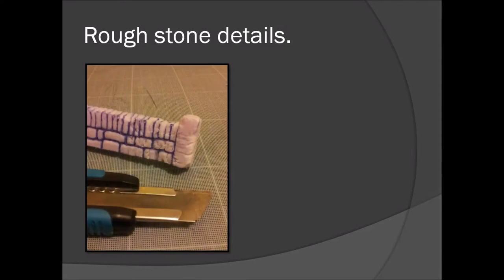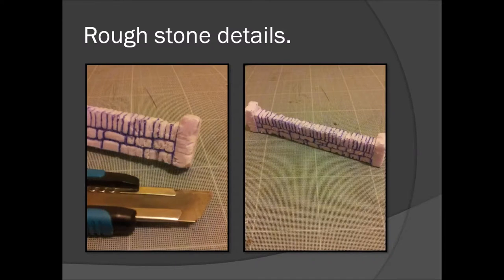So now you want to make the stone look a bit more worn or rough. You do this by taking a hobby knife and start cutting off pieces very roughly and aggressively, like you can see in the picture. It should look something like this when you're done.